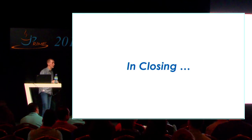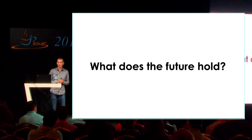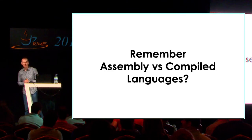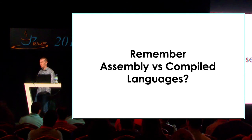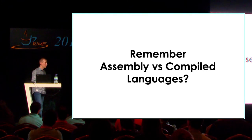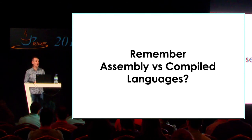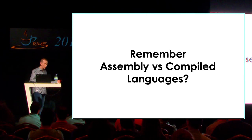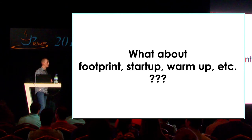In closing, what does the future hold? I'm starting to become an old programmer — rapidly approaching 50. I remember the arguments of assembly versus compilers. Friends who write games argued you had to write in assembler because compilers weren't fast enough. These days, no one has that discussion anymore. On a large program, the compiler will do a much better job than anybody can do handwriting assembler. You might beat the compiler on one specific method, but across a large application the compiler will beat any human.